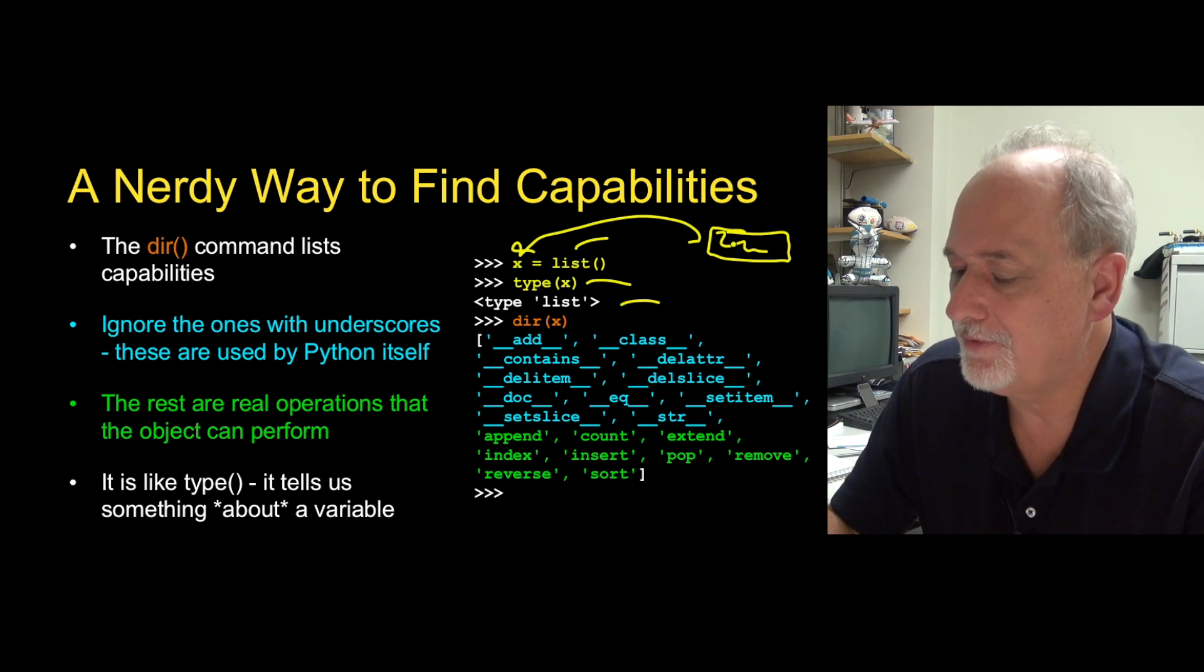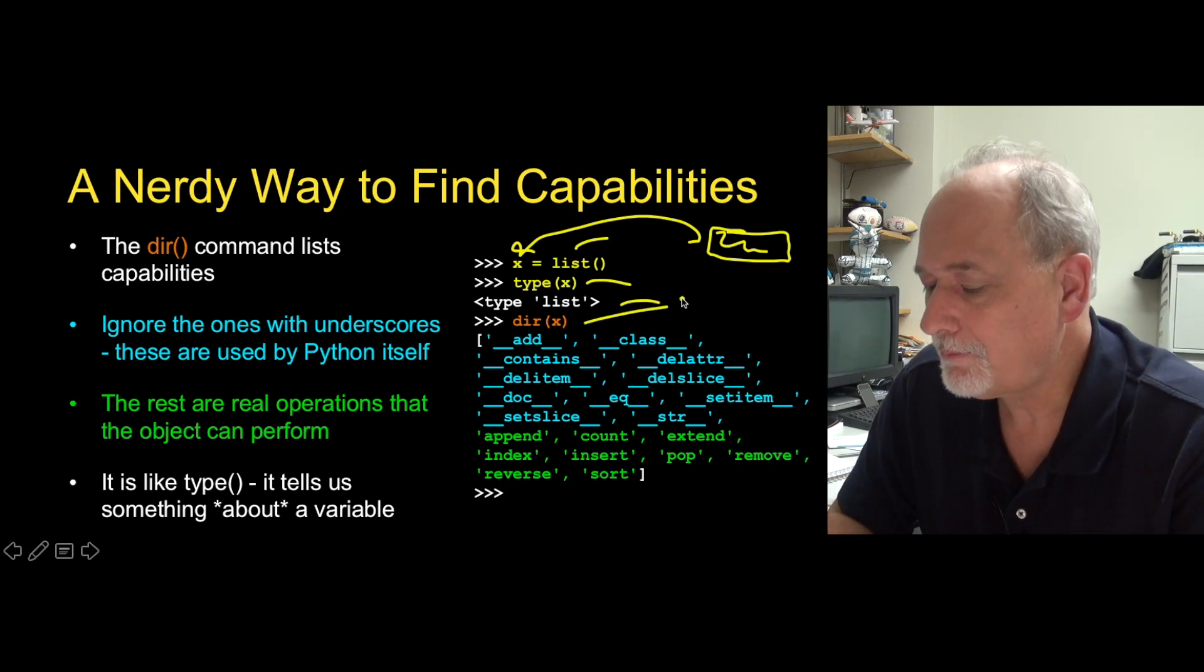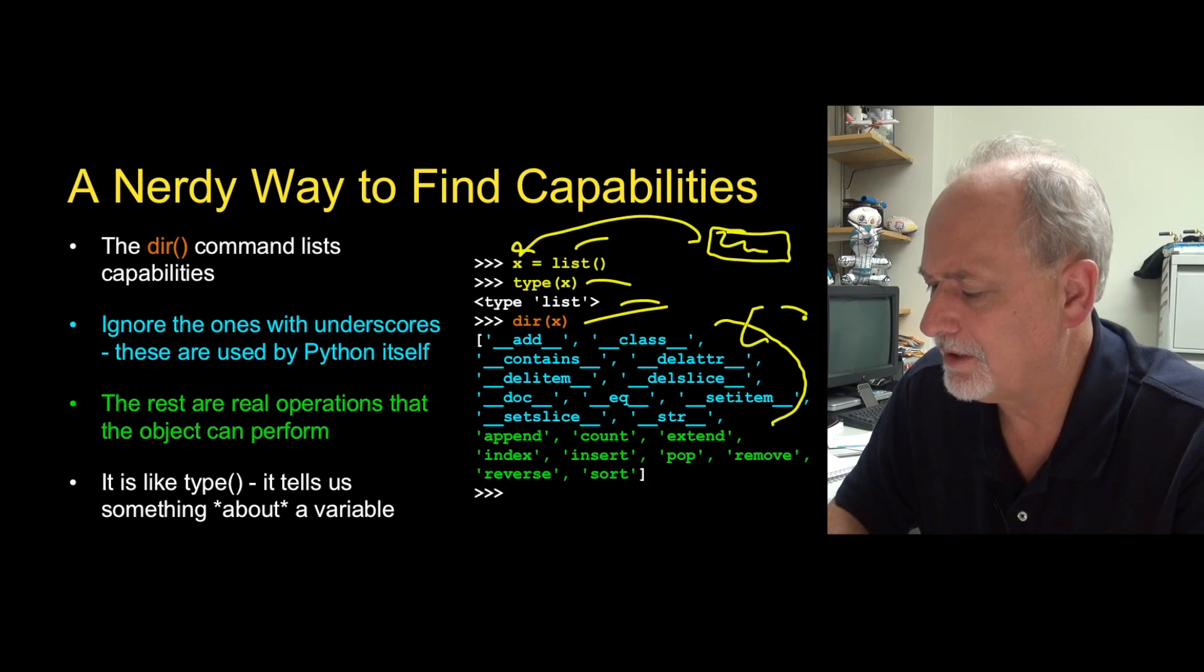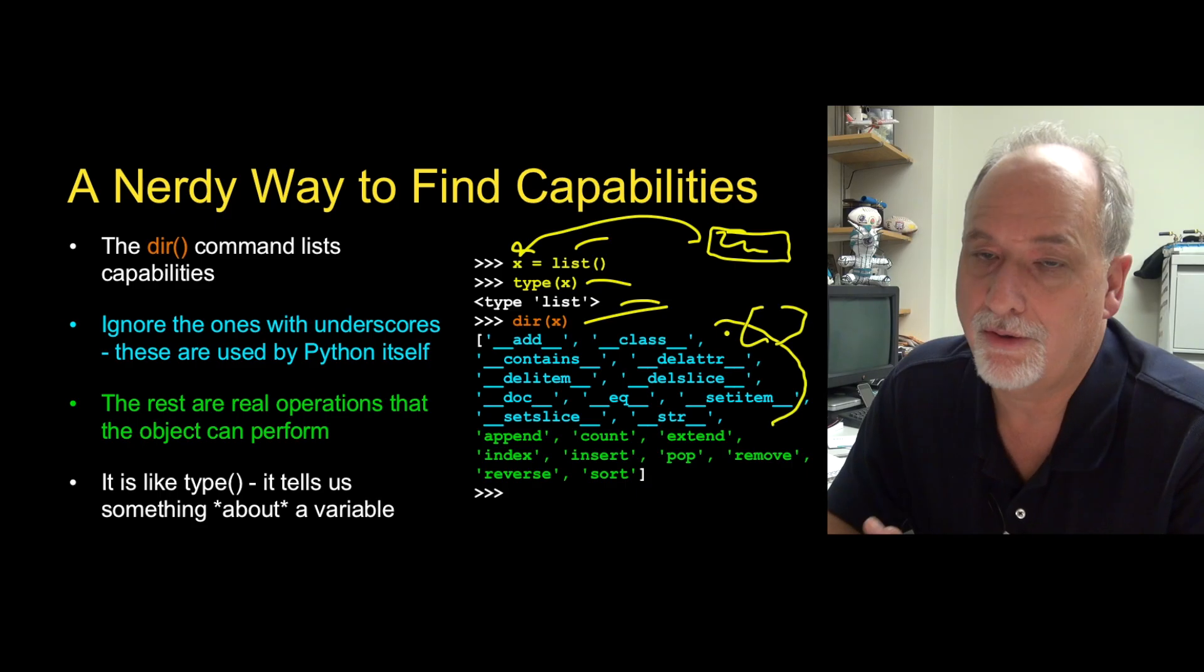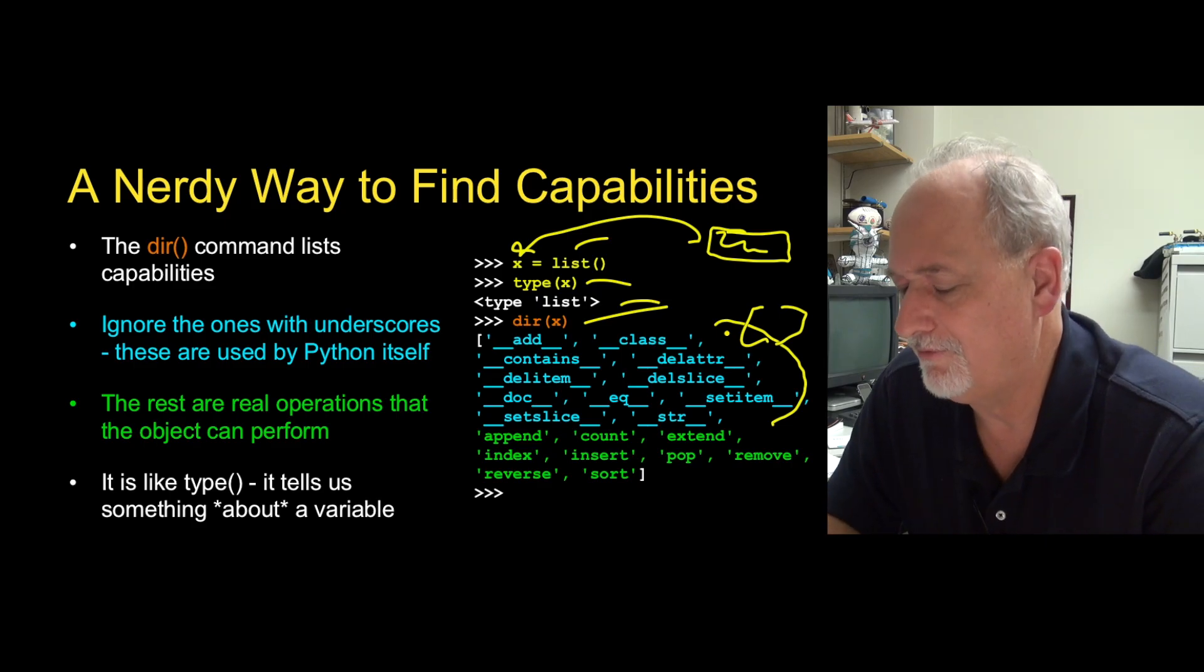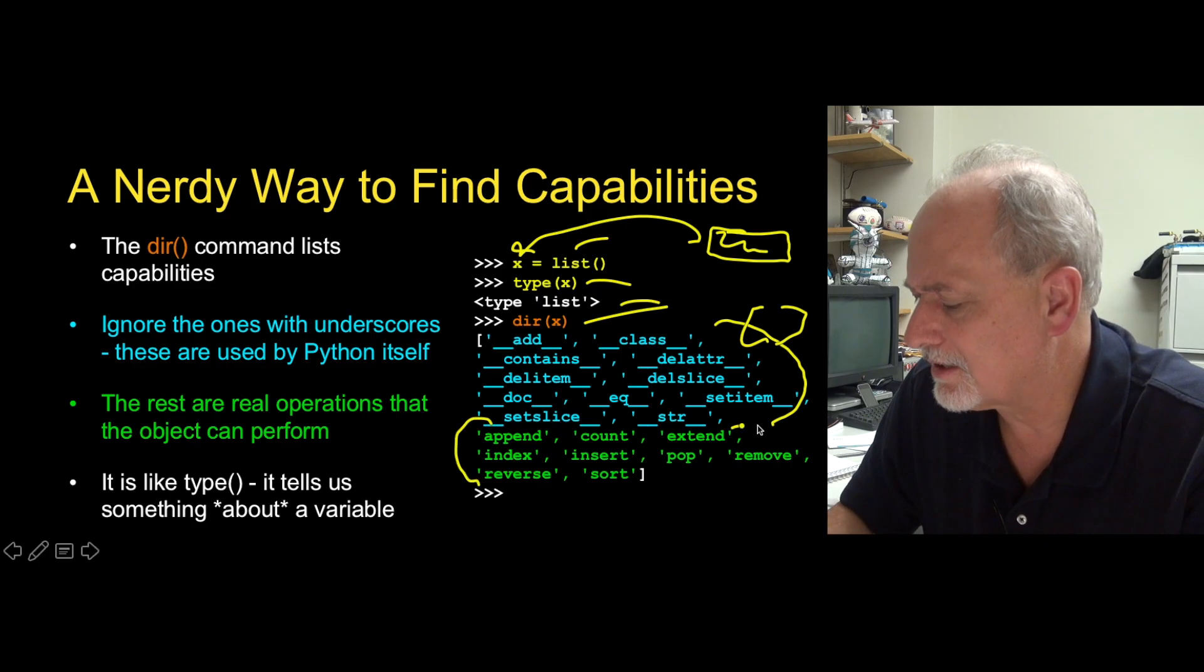And then the dir, if you remember the dir, the dir is the capabilities. And there's all these internal capabilities that do things like implement the bracket operator, et cetera, those double underscore ones. We can ignore them, although you can even look them up and figure out what they mean if you feel like it.